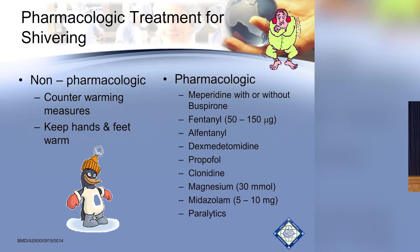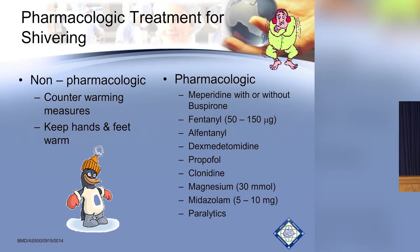There are a number of pharmacologic agents, with no absolute standard. Things like magnesium may have a dual role — it helps with shivering but also helps manage the electrolyte flux of magnesium that occurs during cooling.